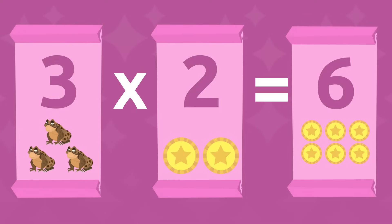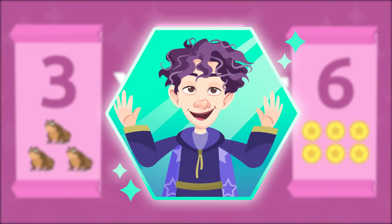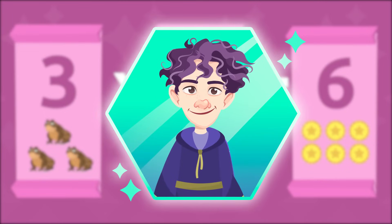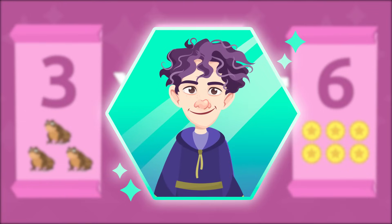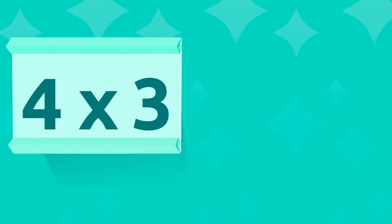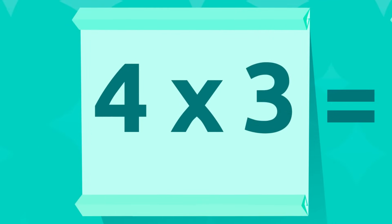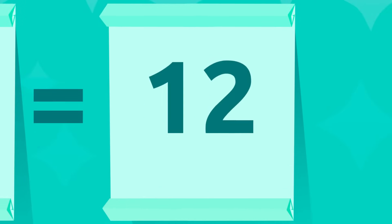Do you see how fast you can count now that you know how to multiply? It's incredible! And how do you call these multiplication numbers? You mean the parts of multiplication? The numbers to be multiplied are called factors, and the answer is the product.